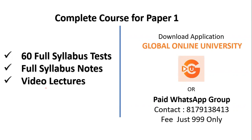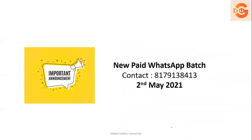Apart from this, our complete course for Paper One includes 60 full syllabus tests, full syllabus notes, as well as video lectures. You can avail all these facilities by downloading the Global Online University application. We also have a paid WhatsApp group — contact details are visible on screen, fees are 999 only. A new paid WhatsApp batch is starting from 2nd May 2021. Those interested can ping on the given number for more information.